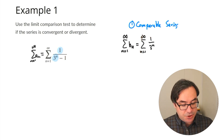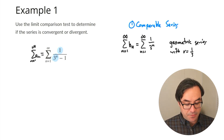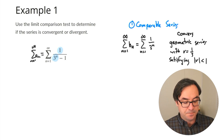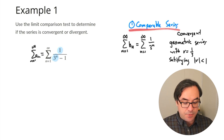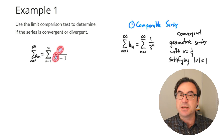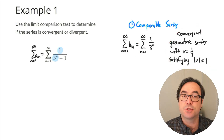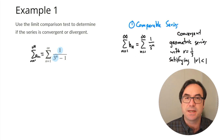So this comparable series sigma bn is a geometric series with r equal to 1/3. We know that when the absolute value of r is less than one, the series is convergent. So sigma bn is a convergent geometric series with r = 1/3.